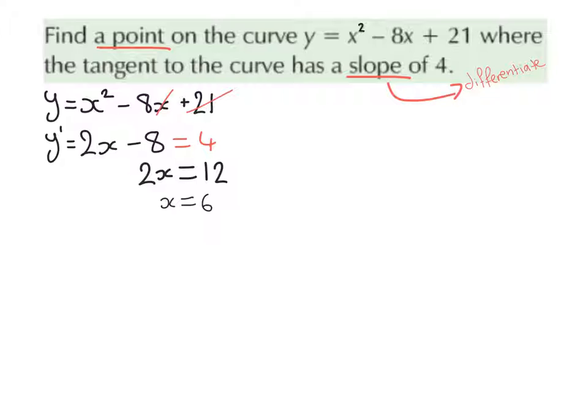Now, we have to go back and read the question again. Find a point on the curve where the tangent to the curve has a slope of 4. So we need a point. At the moment, we have an x value. So what we're going to do with that x value is substitute it back into the original equation, and that will give us the y value. It's very important we do not sub this into the derivative. We sub it into the original function.